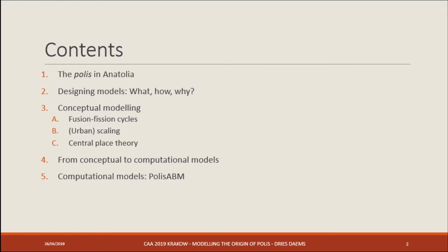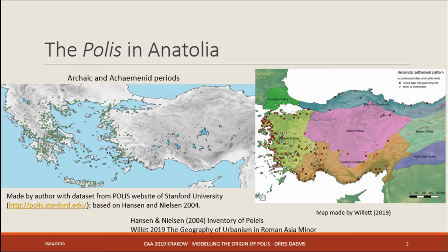The polis is a Greek word and concept meaning main city. There has been a major research project based at the Copenhagen Polis Center that did an inventory of polis communities throughout the Mediterranean. The polis is a phenomenon observed throughout many regions of the Mediterranean world, but focused very much on the Aegean — Greek mainland, the islands, and the west coast of Asia Minor.